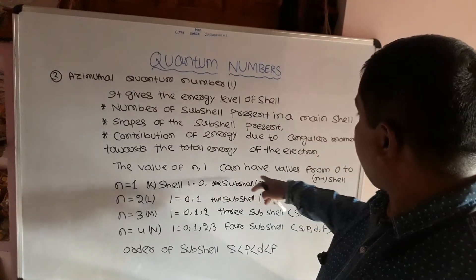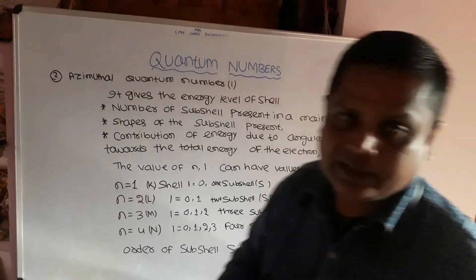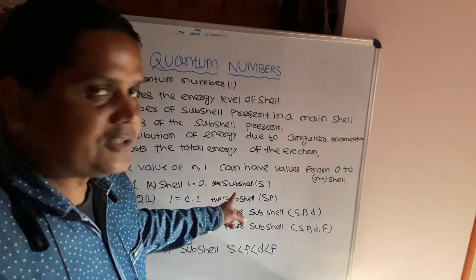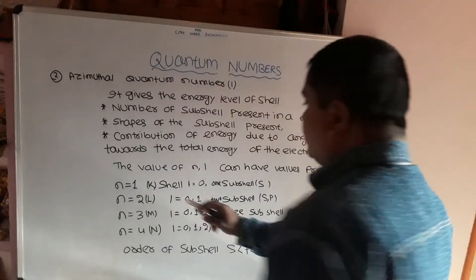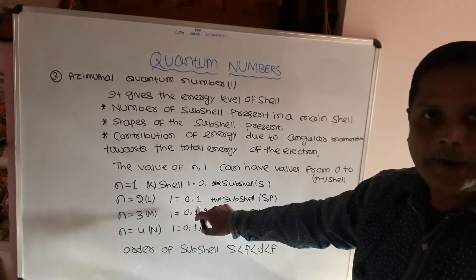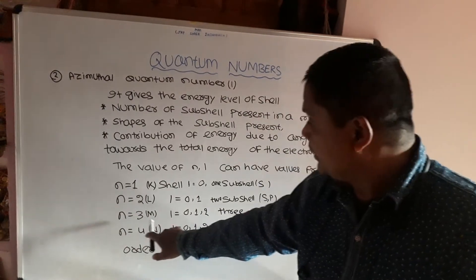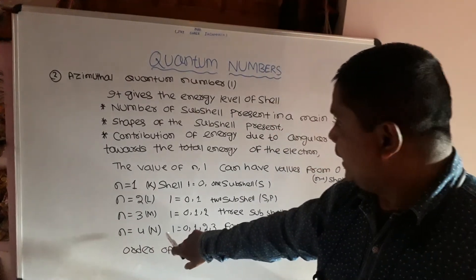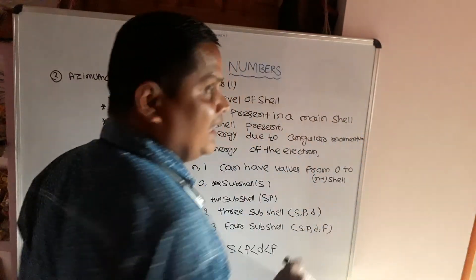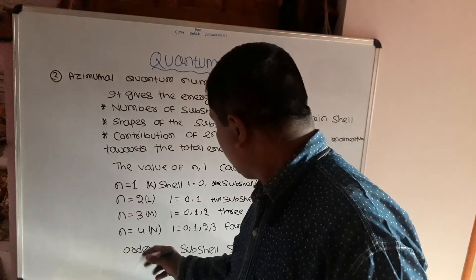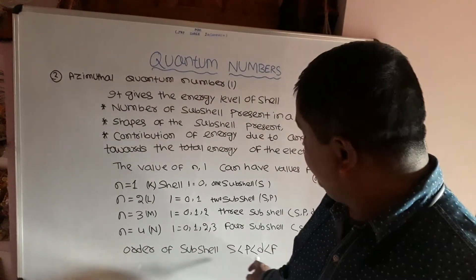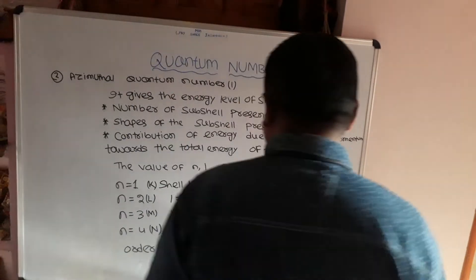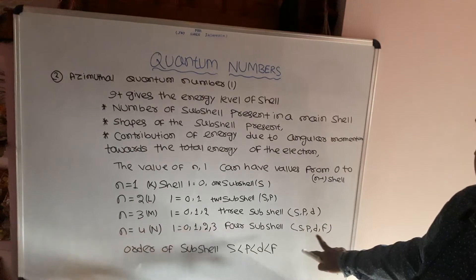The value of the azimuthal quantum number l can have values from zero to n minus one. For n=1 (K shell): subshell s only. For n=2 (L shell): subshells s, p (l=0,1). For n=3 (M shell): subshells s, p, d (l=0,1,2). For n=4 (N shell): subshells s, p, d, f (l=0,1,2,3). The order of energy is s less than p less than d less than f.